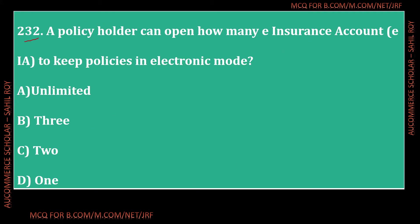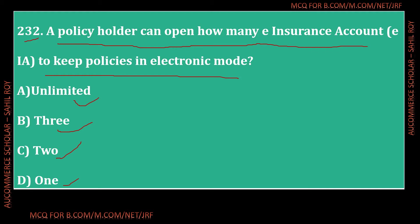Question number 232: A policyholder can open how many insurance accounts to keep policies in electronic mode? Option A - Unlimited, Option B - 3, Option C - 2, Option D - 1. The correct answer is Option D - 1. A policyholder can open only 1 e-insurance account to keep policies in electronic mode.